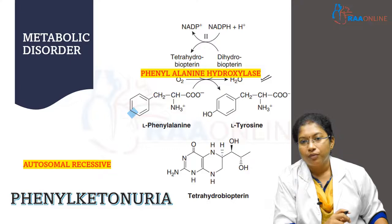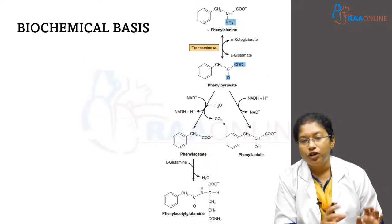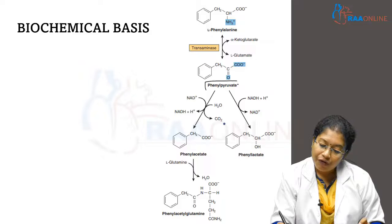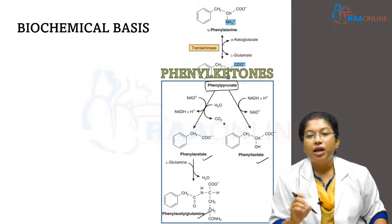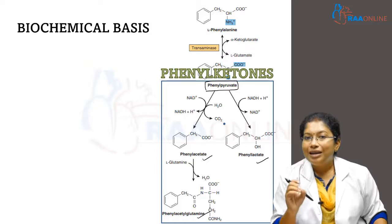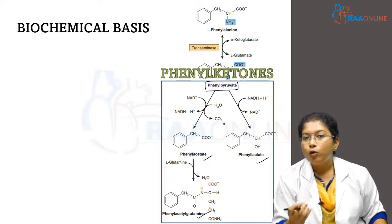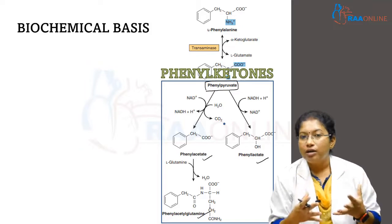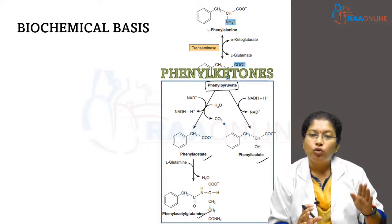Phenylketonuria is an autosomal recessive disorder. Since phenylalanine hydroxylase is deficient, phenylalanine cannot be converted to tyrosine. Instead, phenylalanine enters a minor pathway producing phenylpyruvate, which can further form phenylacetate, phenyllactate, and phenylacetylglutamine — collectively called phenylketones. These accumulate in the blood and are excreted in urine and sweat, causing the characteristic mousy odor.